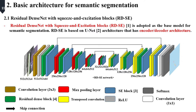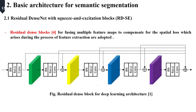Next are the basic architectures for semantic segmentation. We use Residual Dense Net with Squeeze and Excitation block as the base model, referred to as RDSE networks. RDSE is based on U-Net architecture, so it has encoder and decoder components. In RDSE networks, residual dense blocks are widely used, and one residual dense block contains five convolutional layers, as shown in this figure.